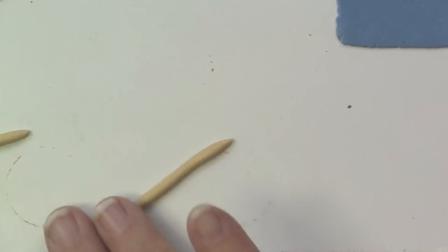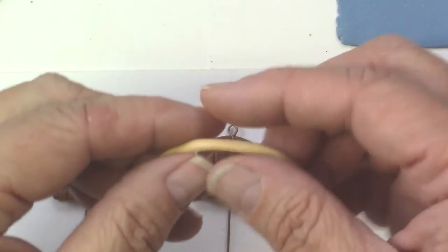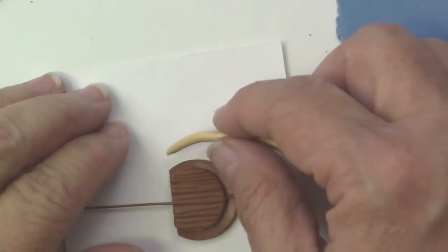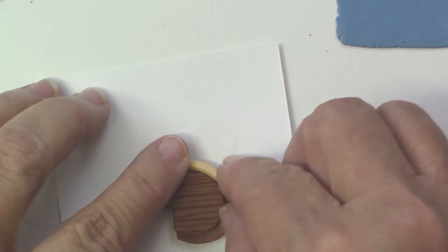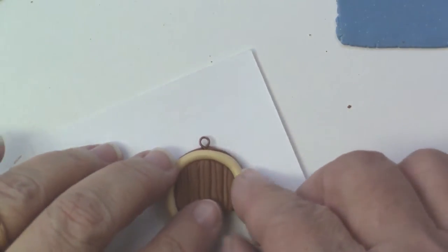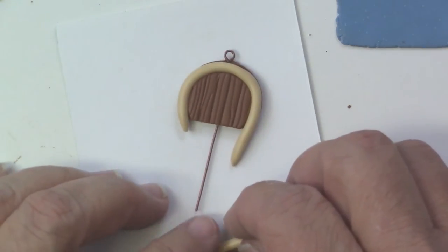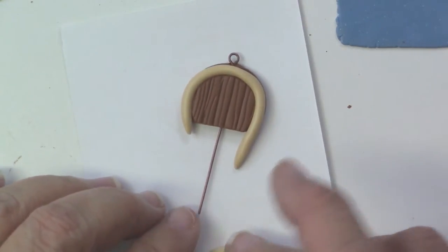I've got some tan ecru color. I'm rolling out a thin snake and I'm going to place it around the door. What I'm going to do with this is texture it and it's going to simulate a look of stone.